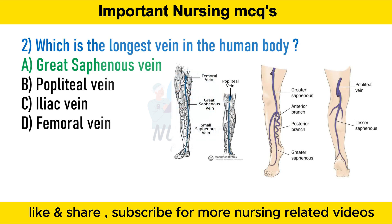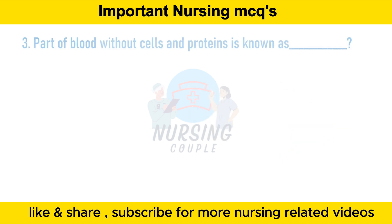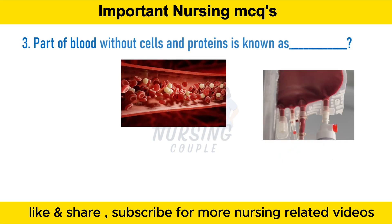The great saphenous veins are blood vessels in the legs that help send blood from the legs and feet back to your heart. Humans have two saphenous veins in each leg: the great saphenous vein and small saphenous vein. The great saphenous vein is also called the long saphenous vein and it is the longest vein in the body, running along the length of the lower limb, returning blood from the foot, leg, and thigh to the deep femoral vein at the femoral triangle.